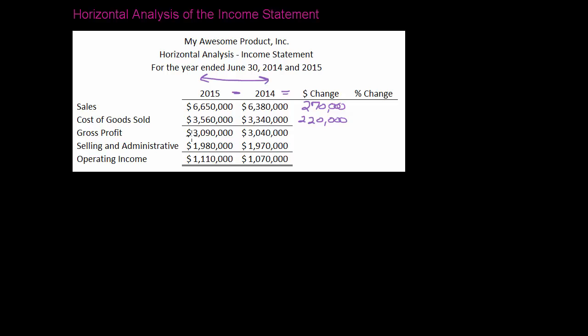My gross profit also increased by $50,000. My selling and administrative increased by $10,000. So in this case everything increased. Now remember, if any of those had been negative you'd want to indicate that it was a decrease.